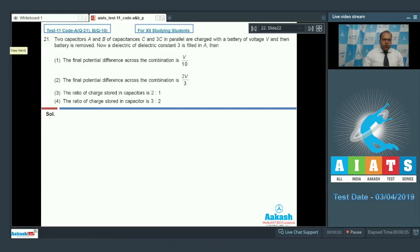So the total charge is given by the charge in the first capacitor is CV and the charge in the second capacitor is 3CV.